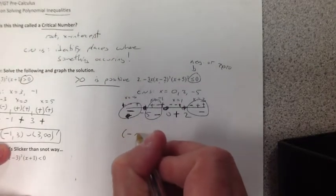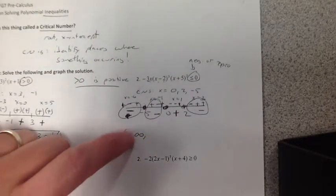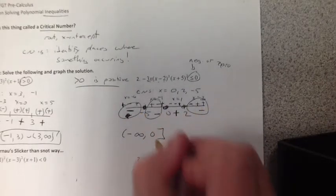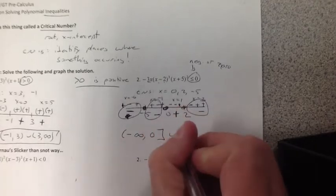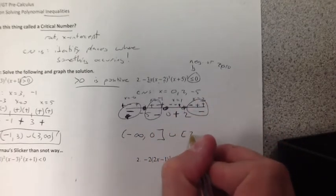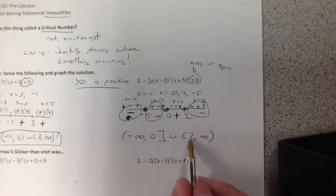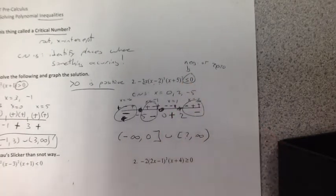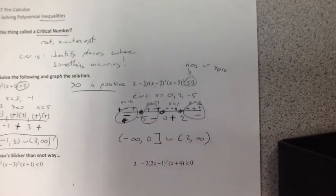That's where it's negative or 0. So I would go from negative infinity, always a soft bracket. Now, because I can include the 5 this time, I'm actually going to go all the way up to the 0, or from 2 to infinity. I can include the 2 and the 0 because of the equal to sign. And that's why those are hard brackets. Now, that's a review of Algebra 2.